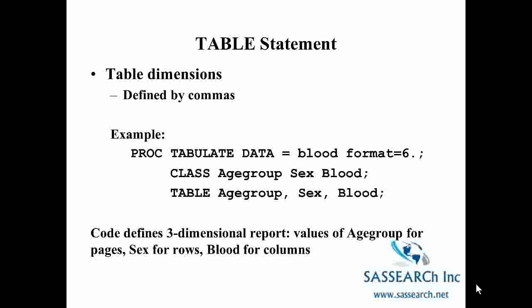Let's focus a little more on the TABLE statement. Table dimensions are defined by commas. Here is some example code where we have three categorical variables: age group, gender, and blood. We have a TABLE statement with two commas, which defines a three-dimensional report. The values of age group are considered the pages, gender are the rows, and blood is the columns.